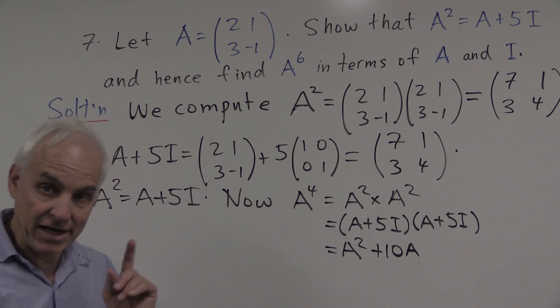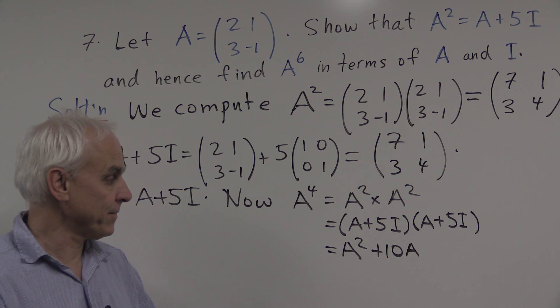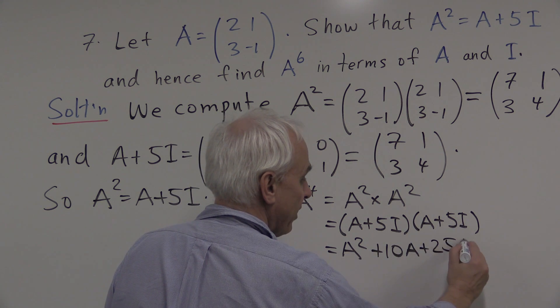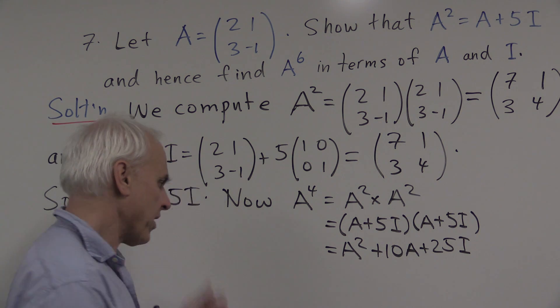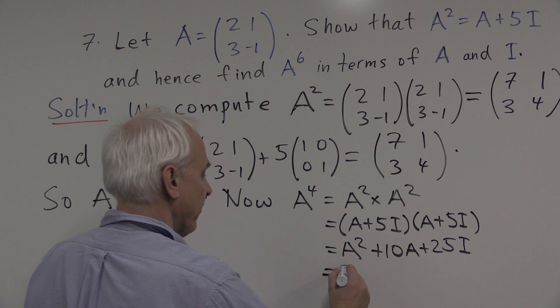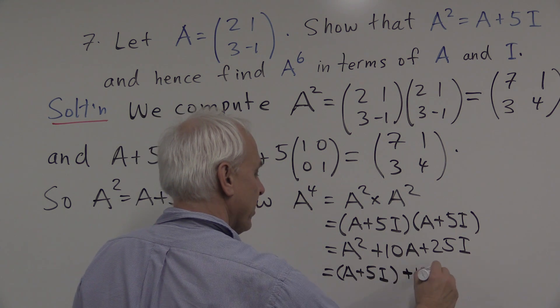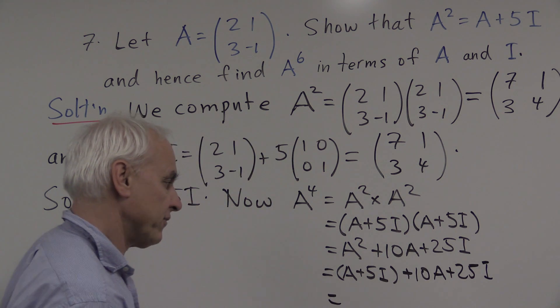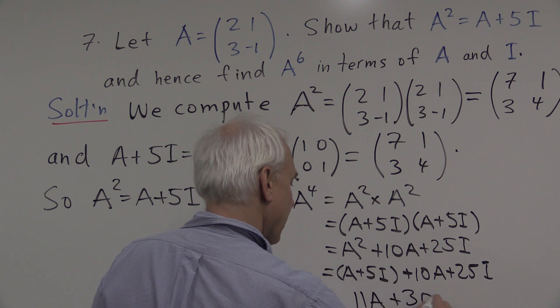I remind you that the identity matrix has the property that when you multiply it by A, you get A. And finally, the product 5I times 5I will be 25I because I times I is I. And can we simplify this? Yes, because A squared is the same as A plus 5I we've just said. So we can replace it with A plus 5I. And then if we look at what we have left over, we end up with 11A plus, all together, 30I.